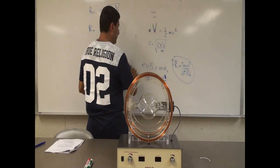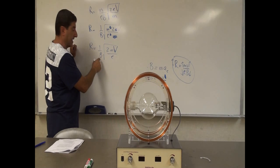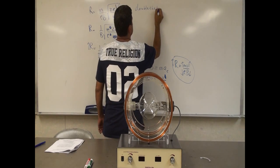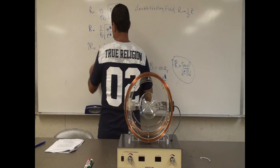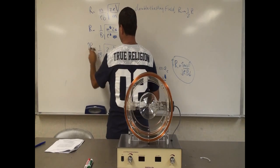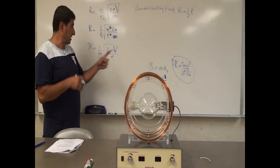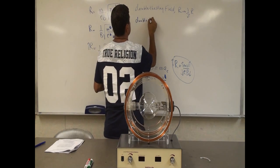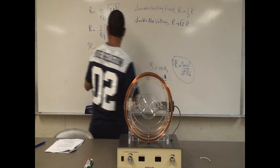One way to use this experiment is to verify these equations. If I double the magnetic field, the radius of the orbit should go down by half. If I triple the magnetic field, the radius should go down by one-third — an inverse relationship. For the voltage relationship: if I double the voltage, the radius should go up by a factor of √2, because of the square root relationship.